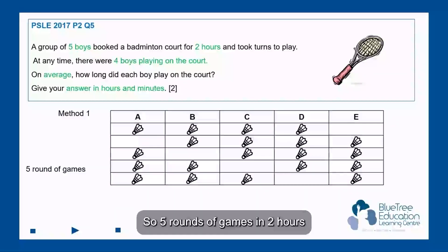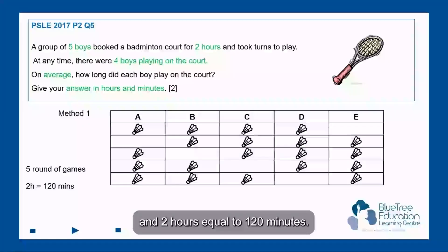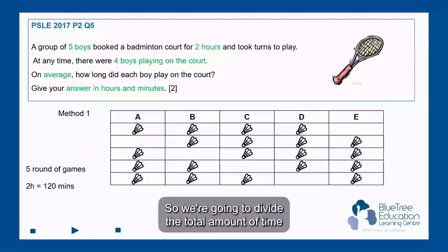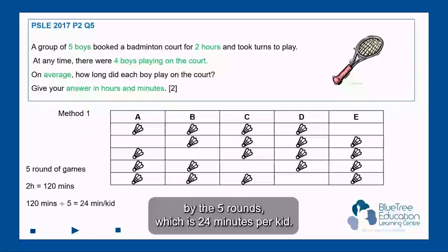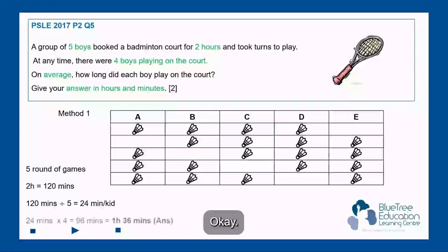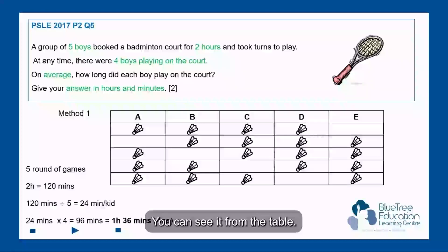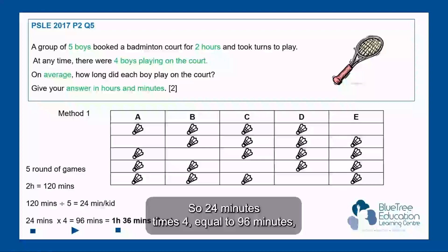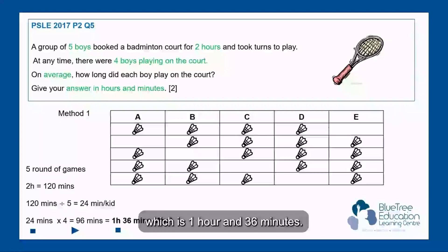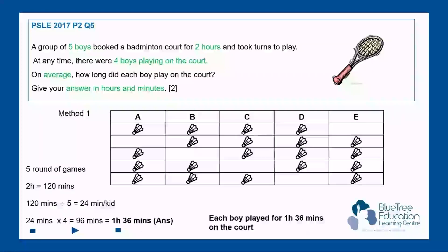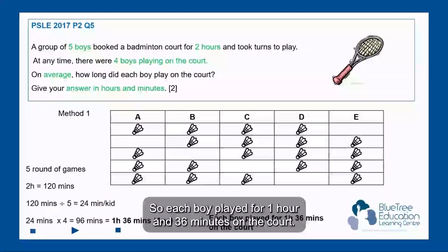So five rounds of games in two hours, and two hours equals 120 minutes. We're going to divide the total amount of time by the five rounds, which is 24 minutes per round. Each kid plays a total of four rounds — you can see it from the table — so 24 minutes times four equals 96 minutes, which is one hour and 36 minutes.